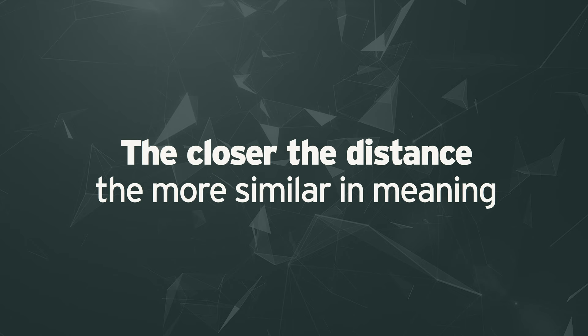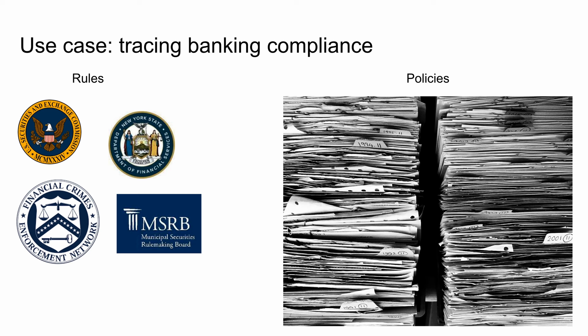Let's jump into some examples. The first example is going to be based on semantic search — a fancy way of searching for text based on meaning. You can take two different pieces of text and find the ones that are most similar using embeddings, because the closer the distance in the embeddings, the more similar the text is. This particular example of semantic search is based on a use case we typically see with our financial services customers, around the area of banking compliance.